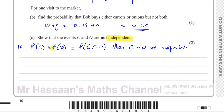Independent means one happening has no effect on the other. For example, if you throw a dice and spin a coin, what happens on the coin and the dice don't affect each other — the outcomes are independent. Or if you take picks from a bag of balls and you replace the ball back into the bag, then the second pick is independent of the first pick. But if you don't replace it, the second pick is influenced by what happened on the first pick — it won't be independent.